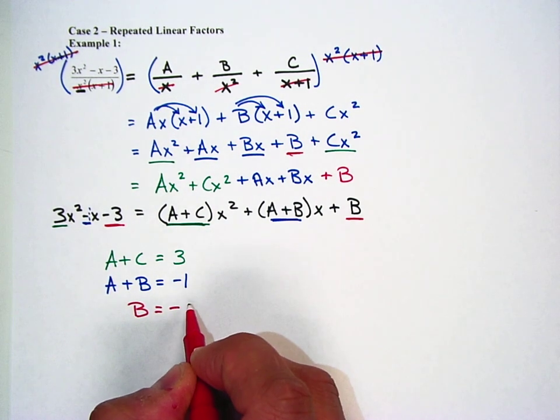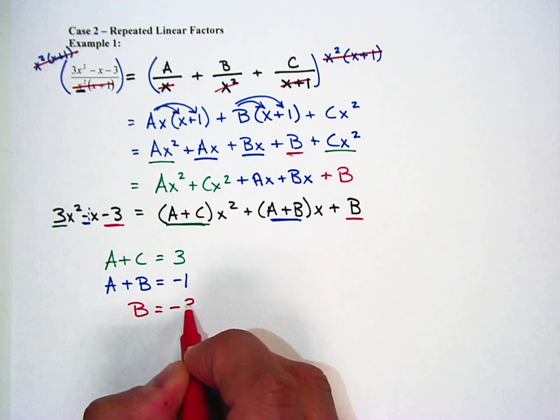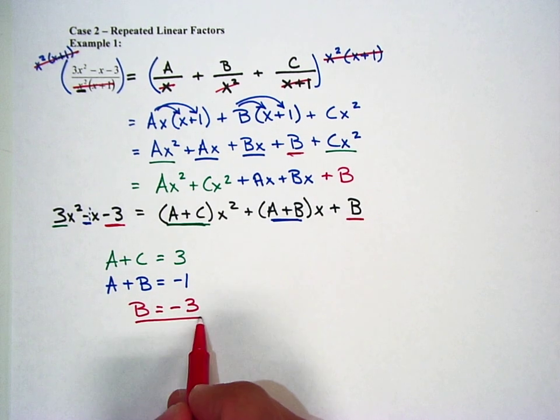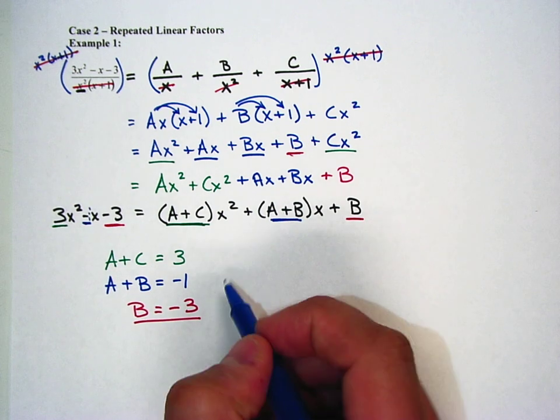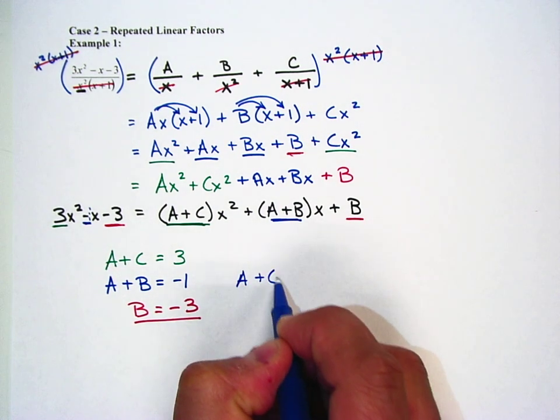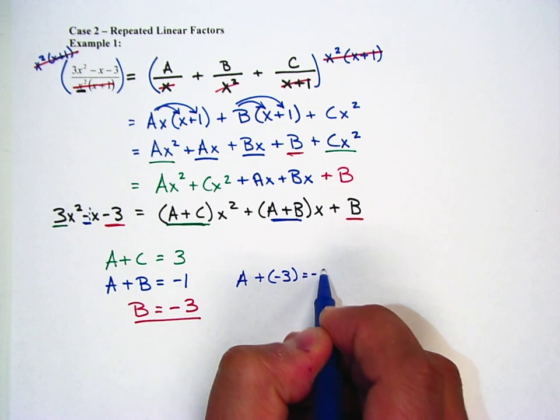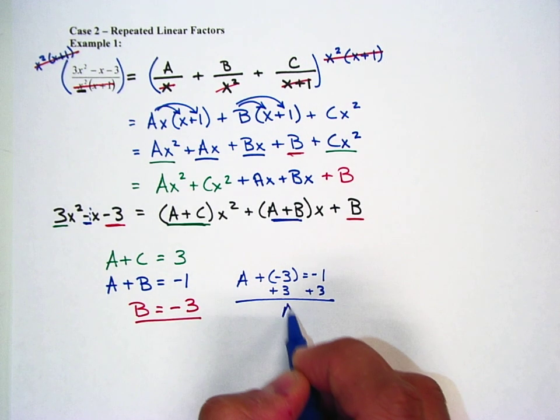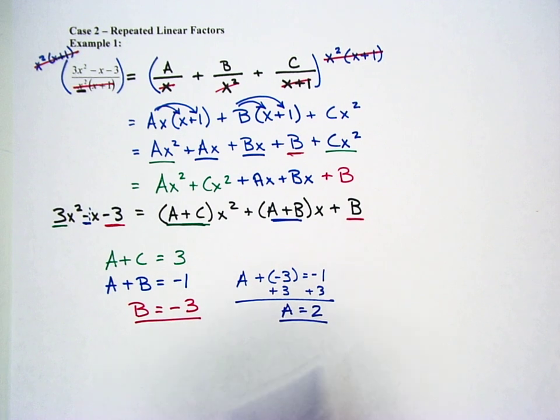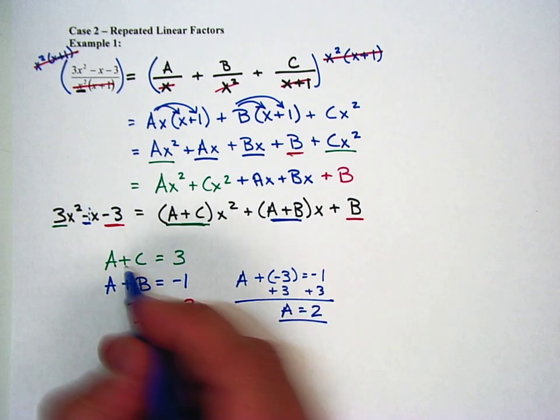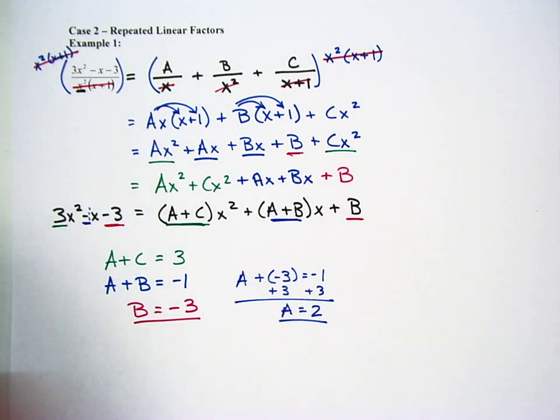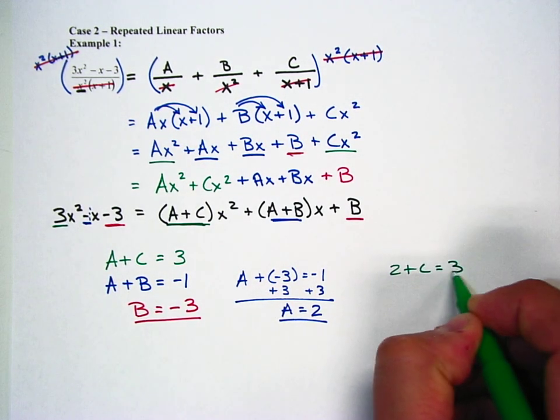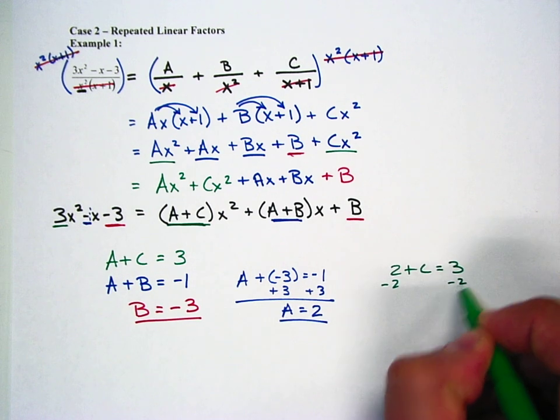Now even though this is a three equation, three variable system, we already know one of the variables. We know B is equal to negative 3. That's very helpful because I can say A plus negative 3 equals negative 1. I would add 3 to both sides and get A equals 2. Now that I have A equals 2, I can plug it into the top equation and say 2 plus C equals 3. Subtract 2 from both sides and get C equals 1.